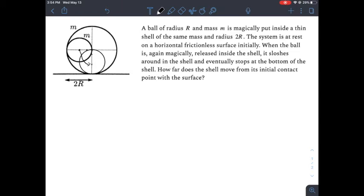Okay, so let's solve for the center of mass of the initial position and the final position. Let's define this point as the central point M initial plus O, and this distance is R. Then m times 0 plus m times R divided by 2m will be equal to R divided by 2.